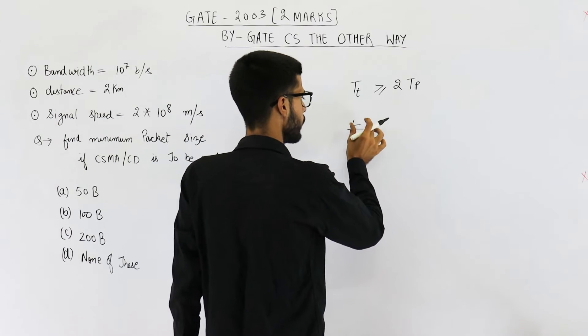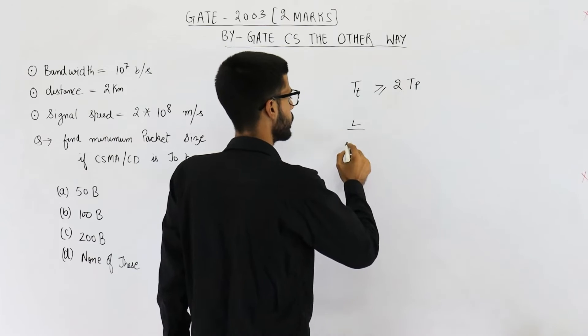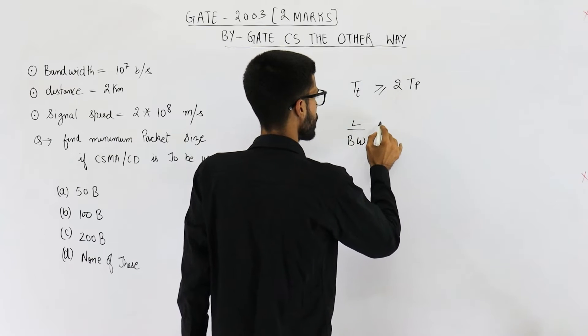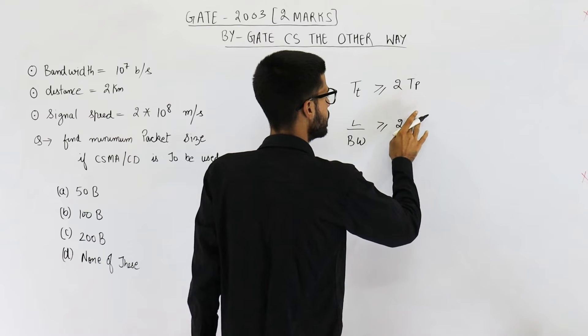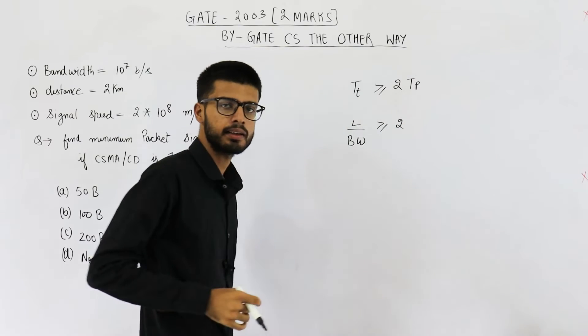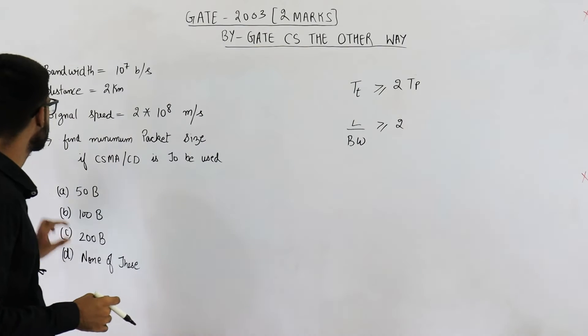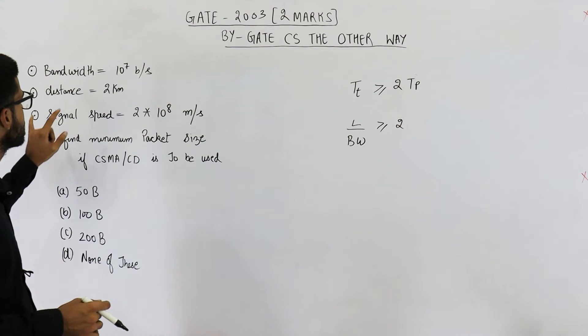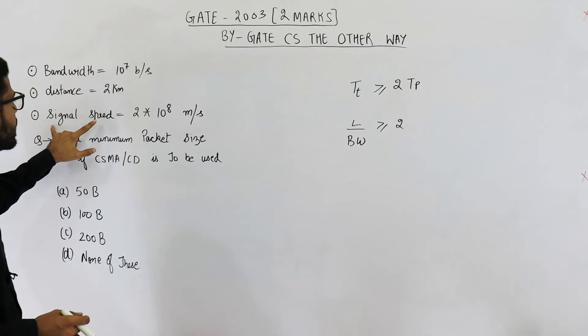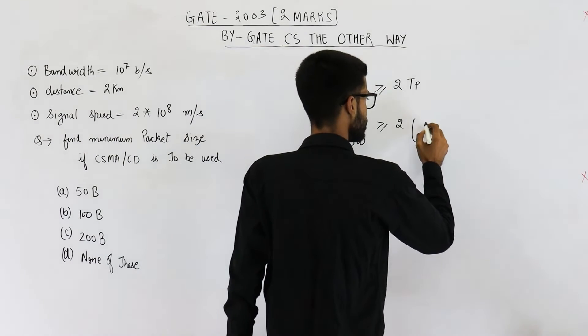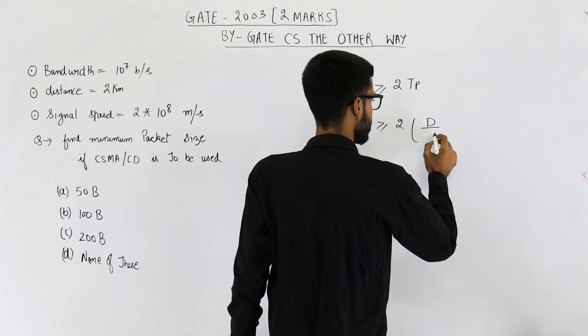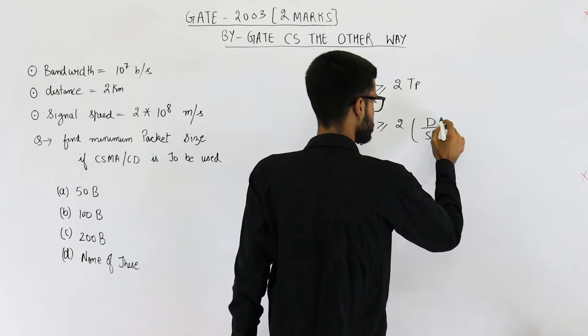Transmission delay is length of the packet divided by bandwidth. This must be greater than equal to two of Tp. Tp is not directly given in the question. So let us also find the propagation delay. Propagation delay is distance divided by the signal speed. So twice of D divided by signal speed.